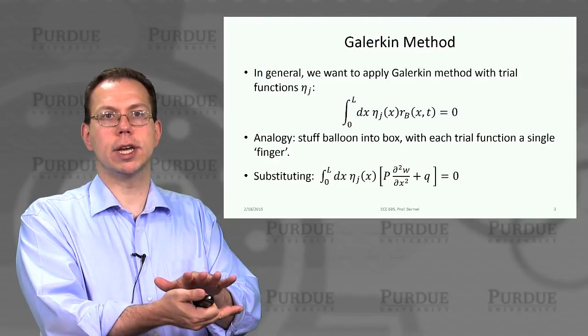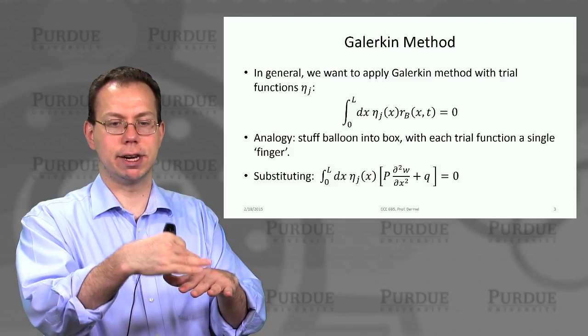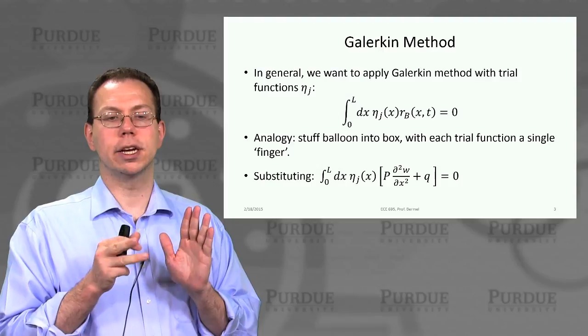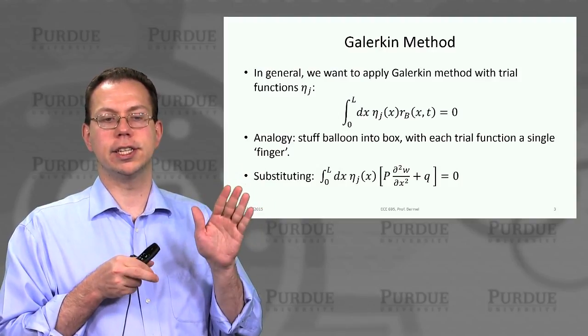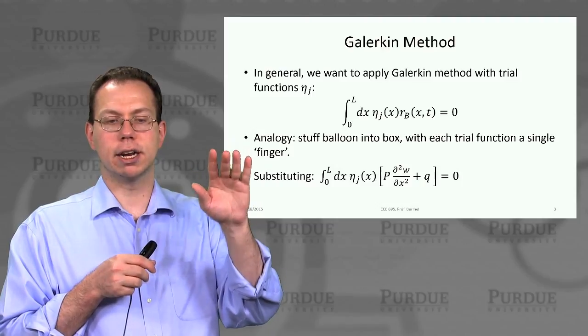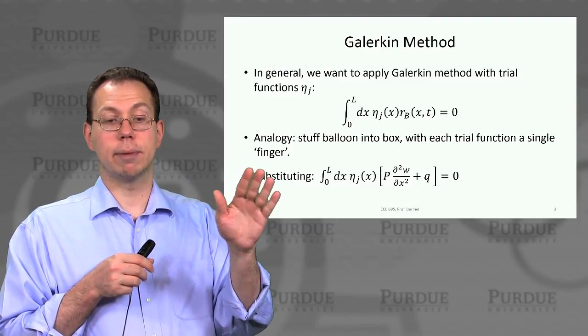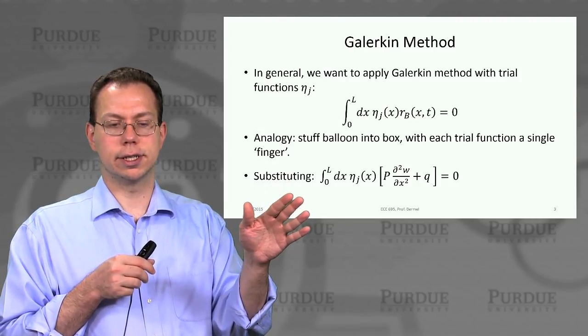The more fingers we have, the more accurately we can stuff it into the box. That's essentially what we're trying to do with these trial functions. Each trial function is a finger that's pinning down our balloon into where we want it to be, which corresponds to integrating the residual error out to zero.